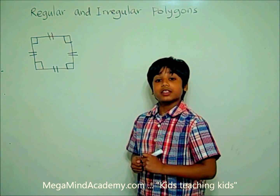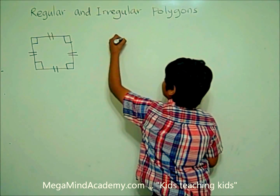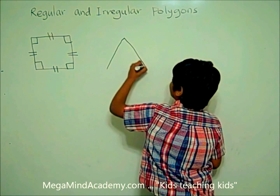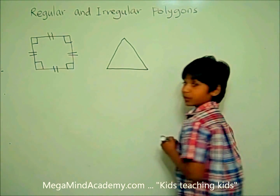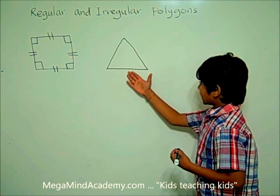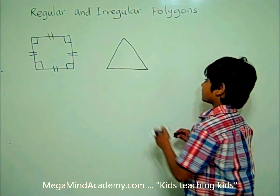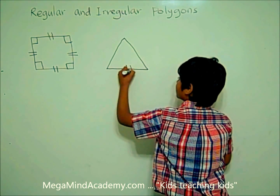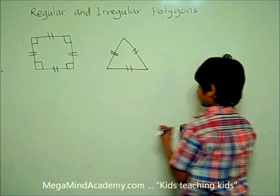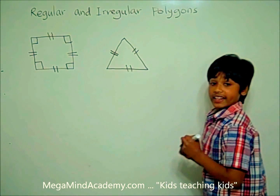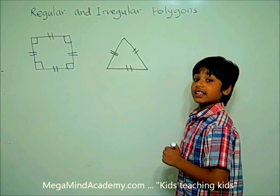What about an equilateral triangle? An equilateral triangle has all the sides the same length, and all the angles are equal too. All the angles are 60 degrees.